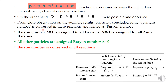By this conservation law, each baryon is assigned a baryon number A equal to +1, and each anti-baryon is assigned a baryon number A equal to −1. All other particles — that is, all particles other than baryons — are assigned a baryon number A equal to zero. Similar to the classical conservation laws, the baryon number is conserved in all reactions.